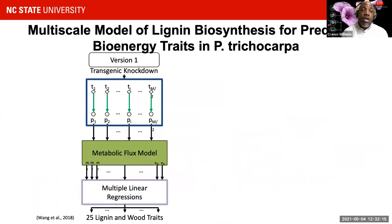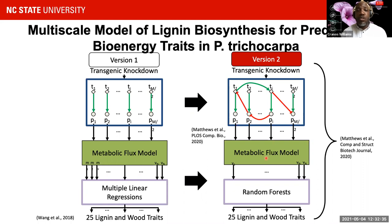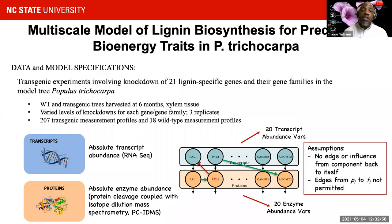Building on initial work done in 2008 with the Bioforest Technology Group, we wanted to extend this work by improving our transcription model by incorporating indirect influences that would hopefully allow us to better predict enzyme abundances that serve as inputs to the metabolic pathway. We also wanted to identify alternative machine learning approaches such as a random forest for better capturing nonlinearities associated with the outputs of the flux model and use that to predict 25 lignin and wood traits. We acquired transcriptome data from transgenic experiments involving the knockdown of 21 lignin-specific genes.